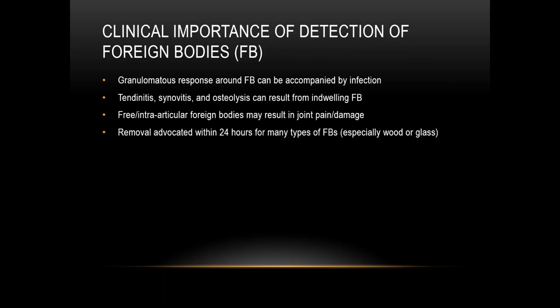The foreign body itself may cause a granulomatous response, which can be accompanied by infection — sometimes chronic — and can sometimes mask the foreign body, making it harder to detect. An indwelling foreign body can also result in tendonitis, synovitis, and osteolysis. A free or intra-articular foreign body in an extremity can result in joint pain and joint damage. Generally, removal is advocated within 24 hours, especially for wood and glass.